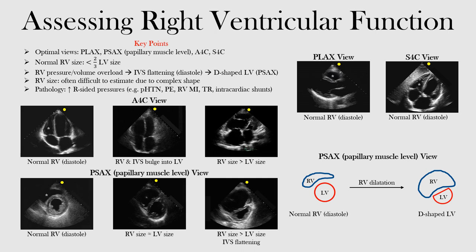Is there any overload or dysfunction? The optimal views to consider are the parasternal long axis view, the parasternal short axis view specifically at the papillary muscle level, the apical four chamber view, and the subcostal four chamber view.